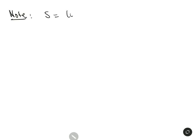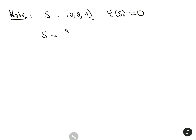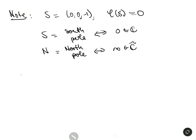Note that the south pole here — where c = 0 — corresponds to the point 0 in ℂ. The north pole corresponds to the point ∞ in ℂ-hat. Hence ℂ-hat is in bijection with S², and it's actually topologically homeomorphic to S².